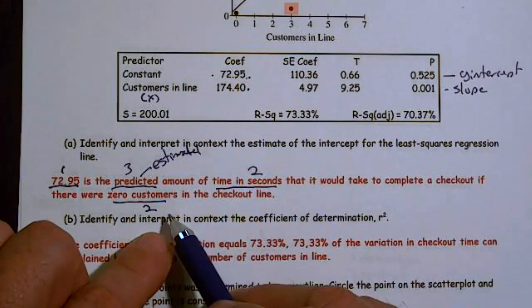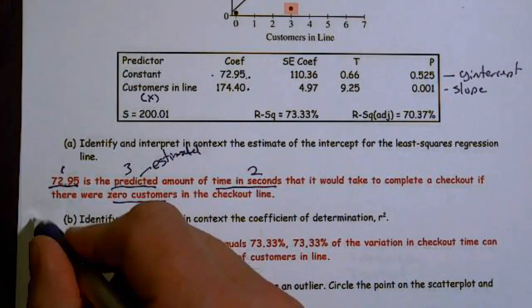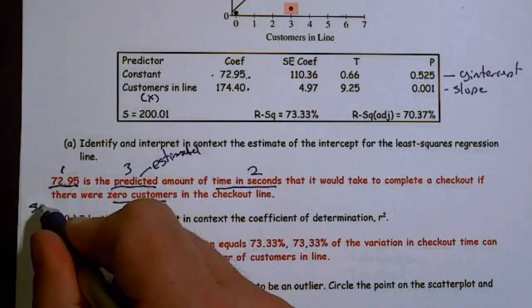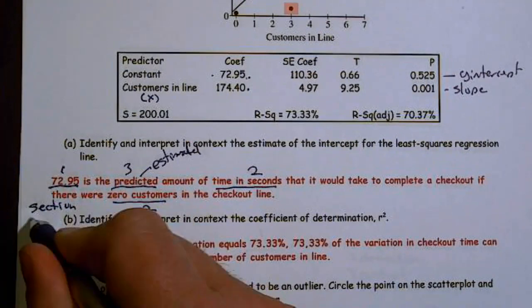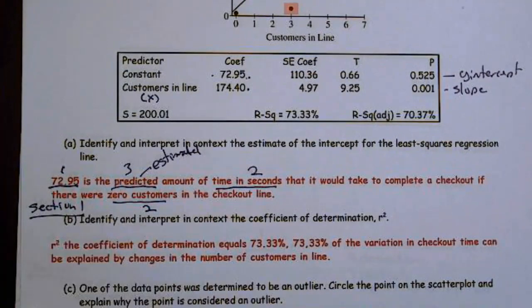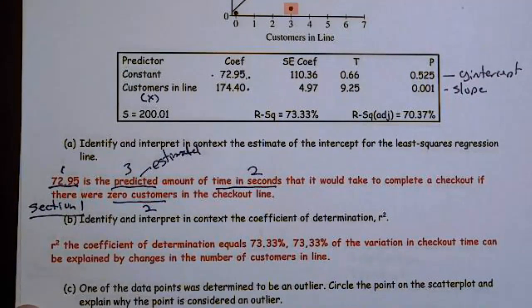And then we had to make sure that we said the word predicted or estimated, or on average, we would expect it to take this long. And the amount of time in seconds for zero customers. If you got two of the three, you got a partial. If you had all three parts, you got an E.